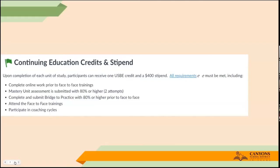Just a reminder about continuing education credits and stipend. For each of these units, you get one USBE credit from the state, which is equivalent to one point on our lane change. In Canyons, every 20 hours you can apply for another lane change credit. You also get the $400 stipend for each of the units. More information will be coming very soon about university credits — we are partnering with UVU and SUU to offer university credits, which are good if you ever wanted to move out of state, or if you are thinking of doing a master's degree, you could get up to 12 credit hours for our eight units of Letters study.